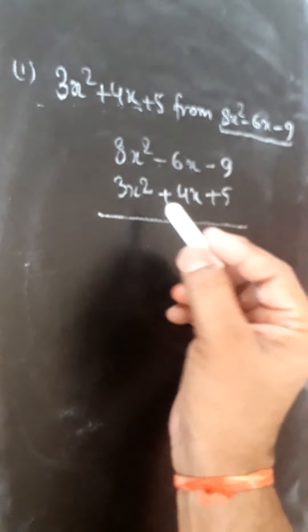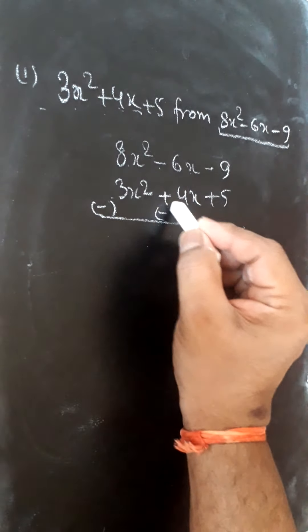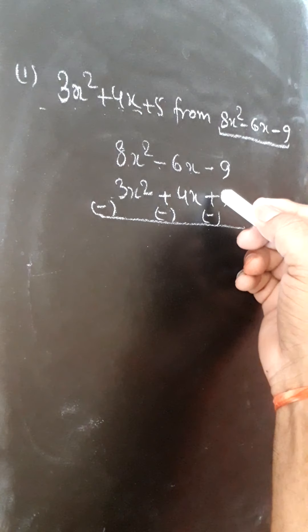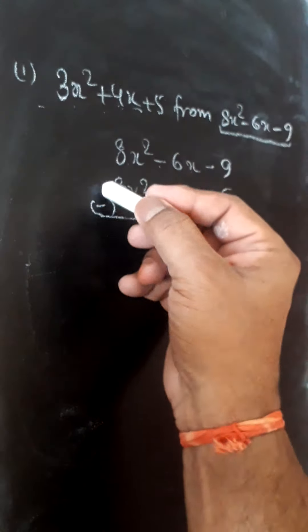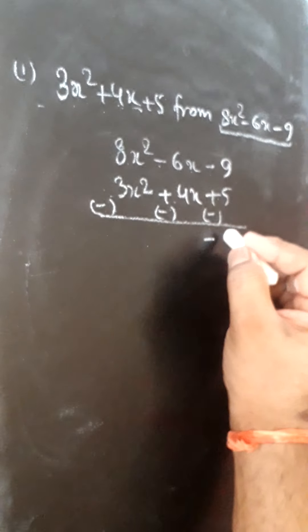Now the next step is to change the signs. Minus minus 9 becomes positive, so I have written negative for plus. Now minus 9 and minus 5 will become minus 14.